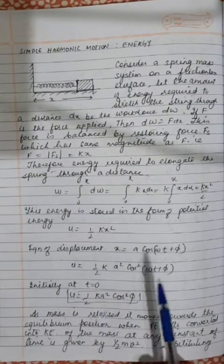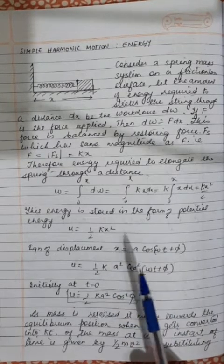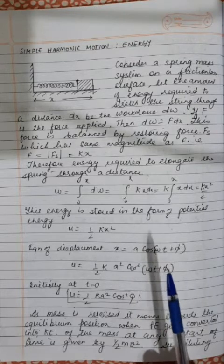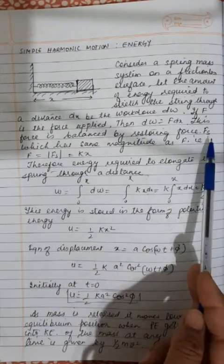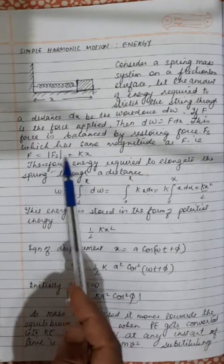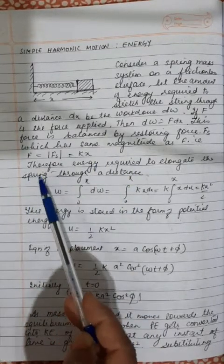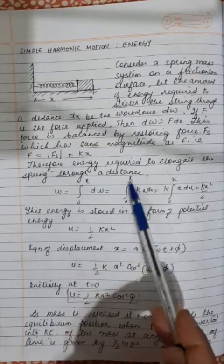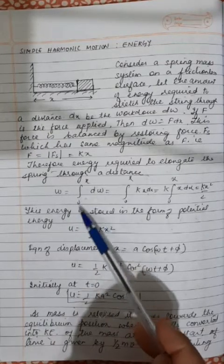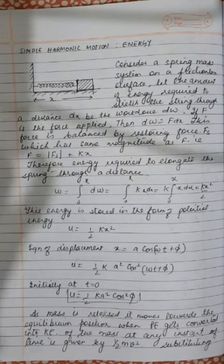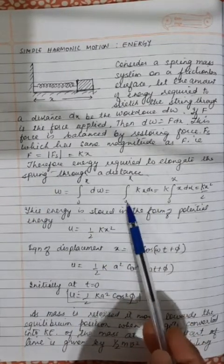Next topic is energy in simple harmonic motion. Consider a spring-mass system on a frictionless surface. Let the work done to stretch the spring through a distance dx be dW. If F is the force applied, then dW = F dx. This force is balanced by the restoring force F_s = kx. Therefore the energy required to elongate the spring through a distance x equals the work done: W = ∫₀ˣ kx dx.